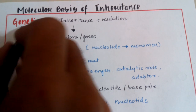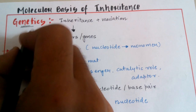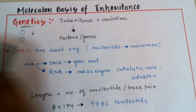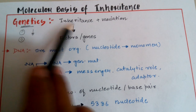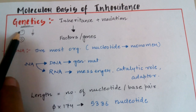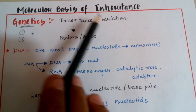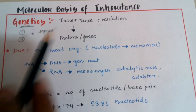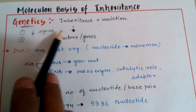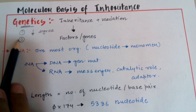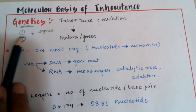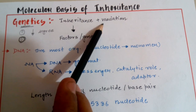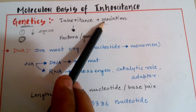What is inheritance? Inheritance is the passing of characters from parents to offspring, that is, from parents to children. Variation is the degree by which the parents are differing from the offspring — the degree of difference or the degree of variations between offspring and parents.